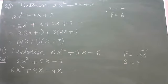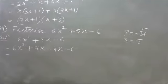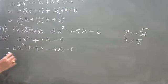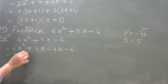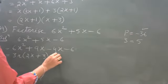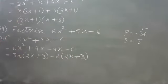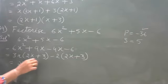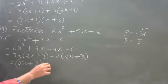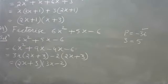Always verify that the product and sum are correct before proceeding. Taking 3x common from the first two terms gives 3x into 2x plus 3, and taking 2 common from the last two gives 2 into 2x plus 3. So the factorization is 2x plus 3 into 3x minus 2. These are the factors.